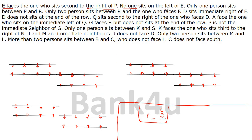The next clue is: no one sits to the left of E. So E must be at an extreme end. There are four possible positions where E can be placed — two in the south-facing group and two in the north-facing section of row 2 — giving us four possibilities to consider.